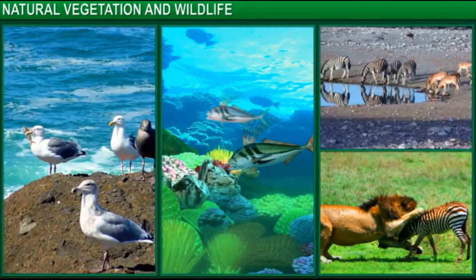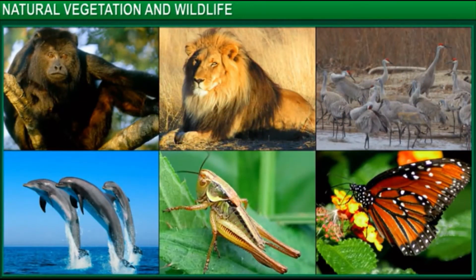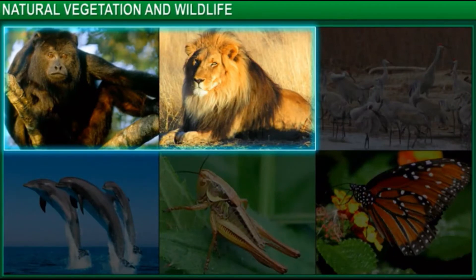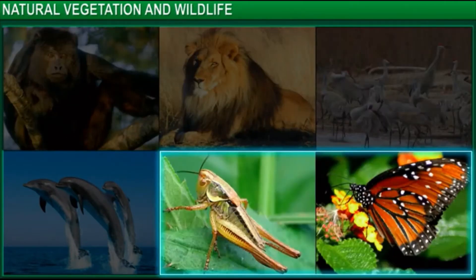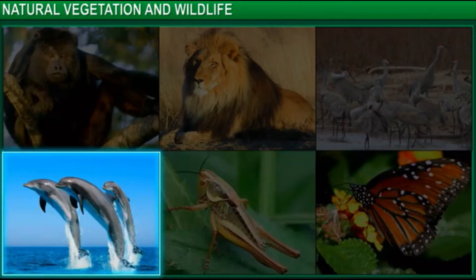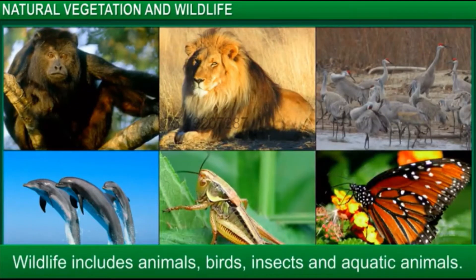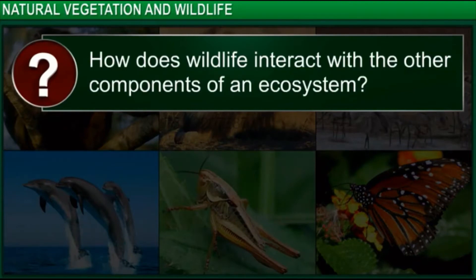Let's move on to another component of our ecosystem — wildlife. Here are a few examples of creatures that comprise wildlife. Wildlife includes animals, birds, and insects, as well as aquatic animals such as fish.